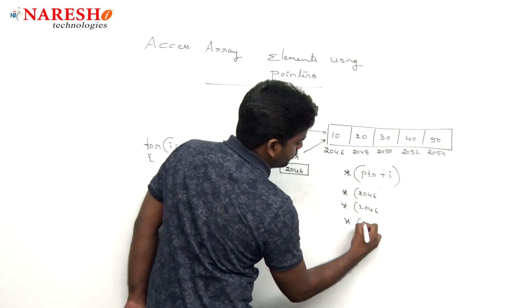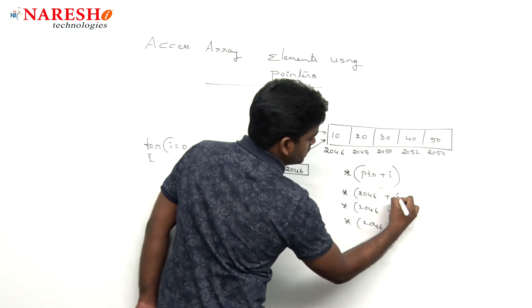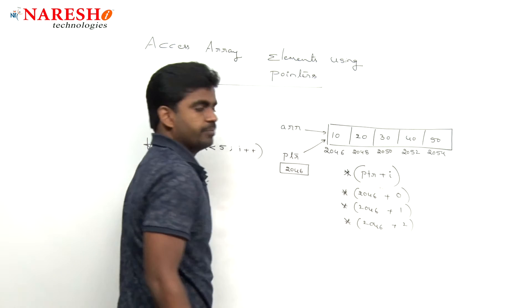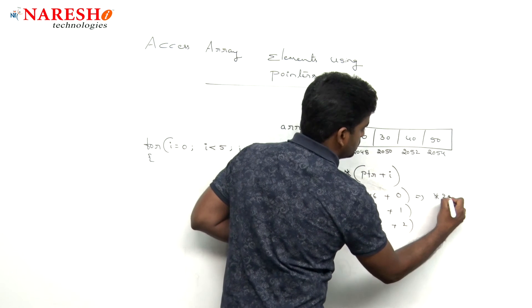Like this it will go: 2046 plus 0 is 2046 only.